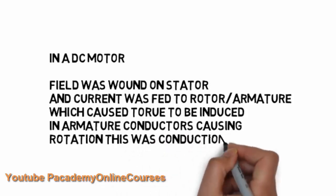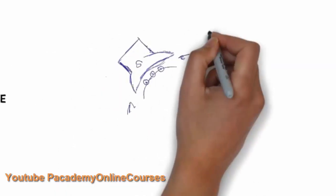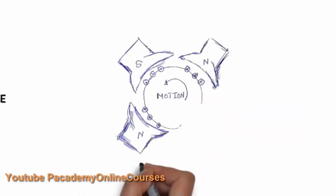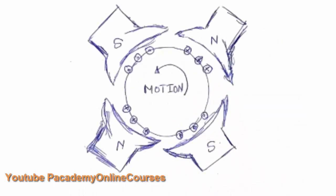This torque caused a rotation and the motor worked on Fleming's left-hand rule. The field is created by south and north poles and the field magnets, and then there are conductors each of which carry a current, the direction of which is shown by the dot and the cross.